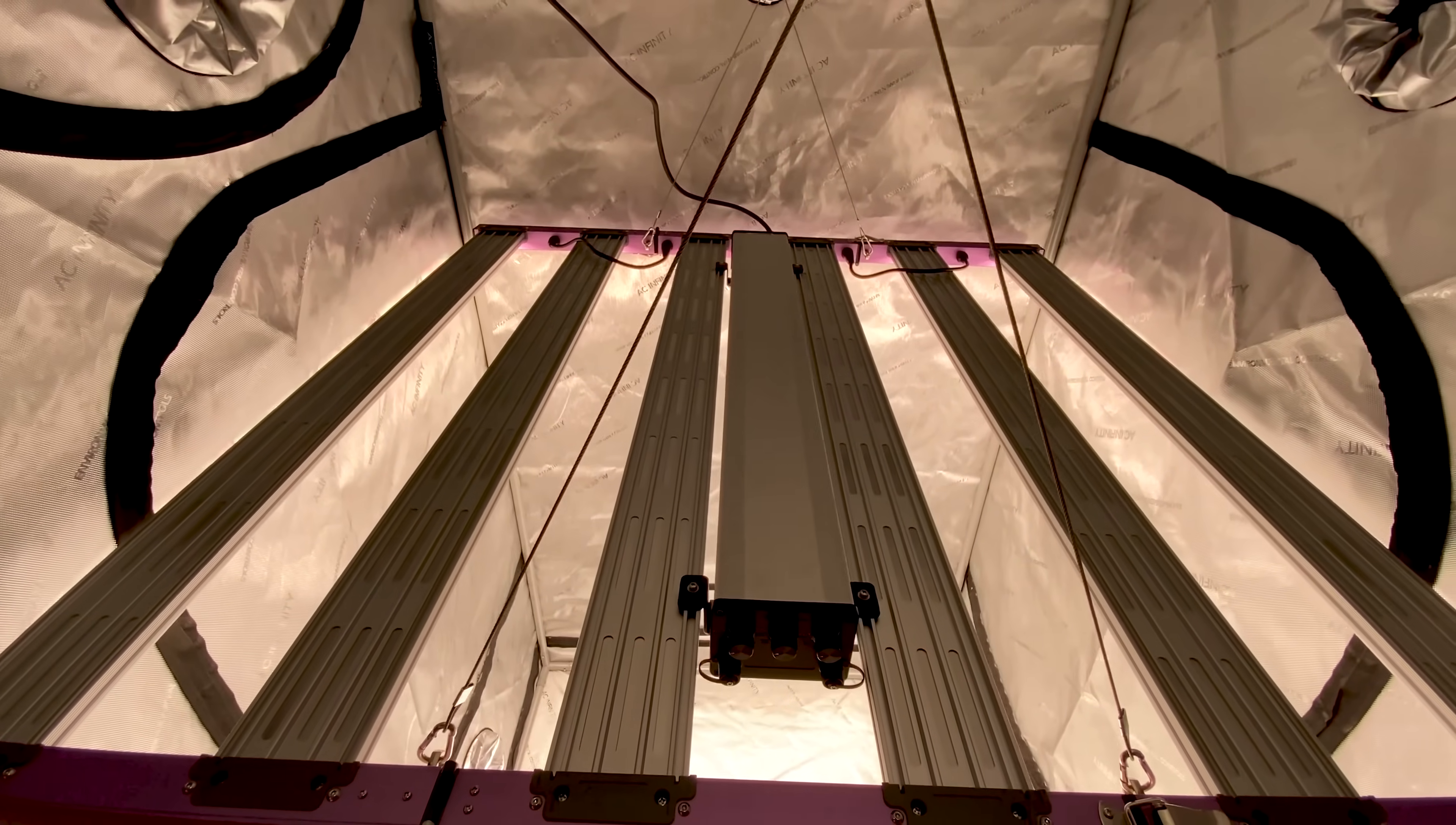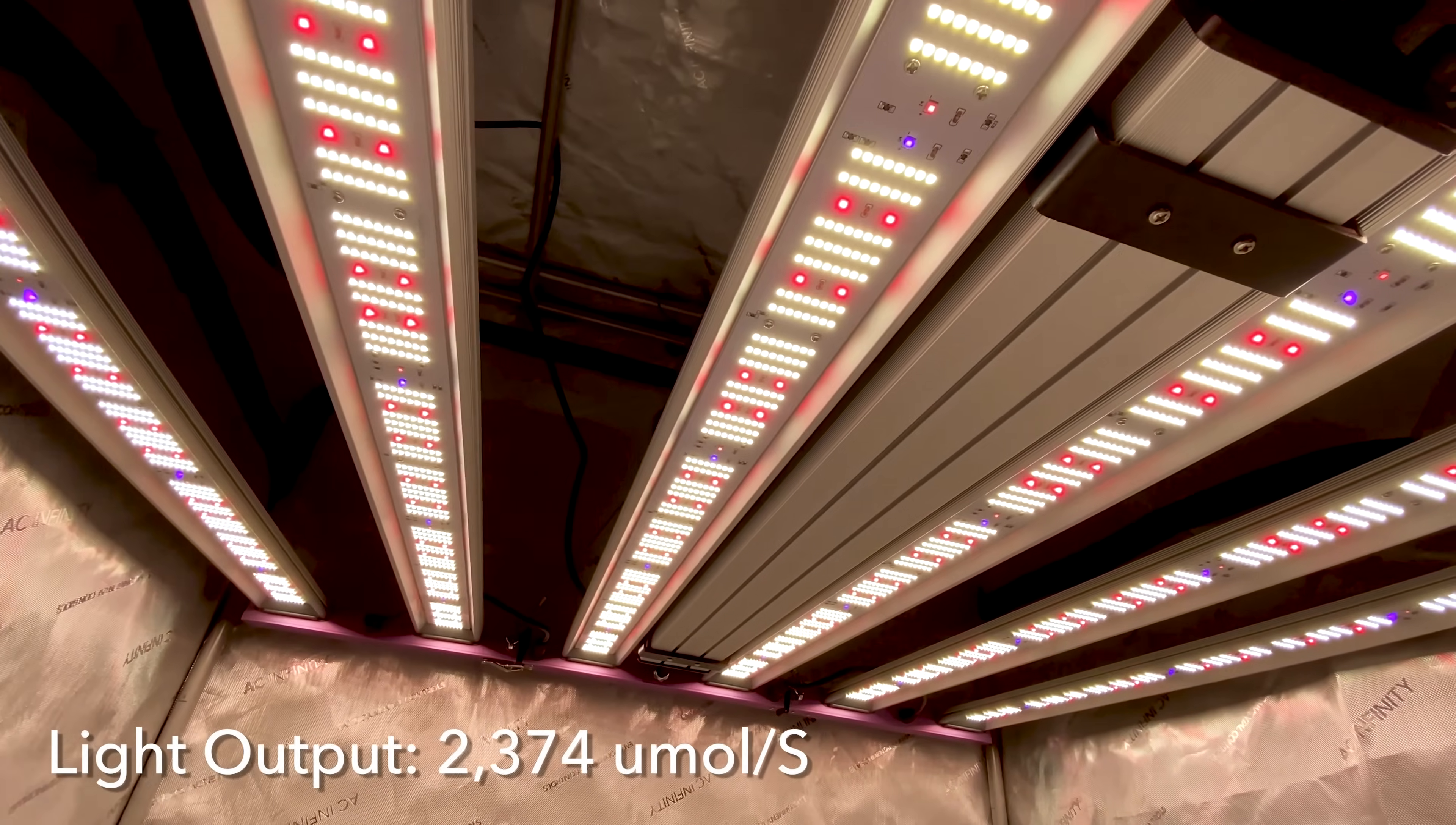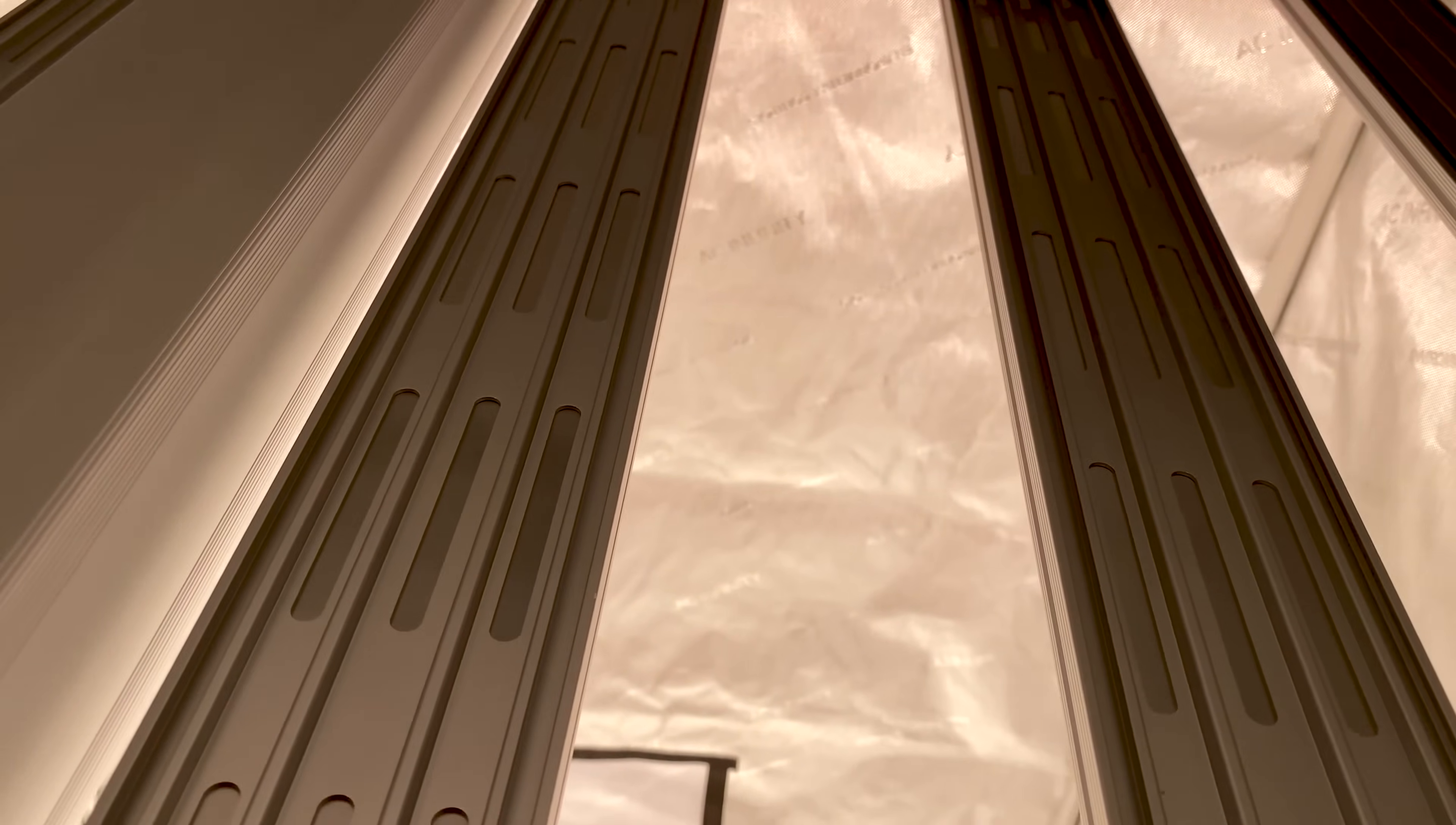When it comes to performance, the SL830 is at the top of its class. The fixture boasts an impressive light output of 2374 micromoles per second and PAR efficacy of 2.86 micromoles per joule, ensuring your plants receive the most efficient lighting possible. The fixture is passively cooled, meaning no noisy fans, just efficient, reliable operation.